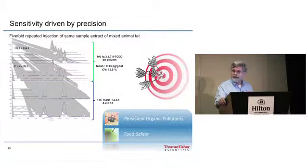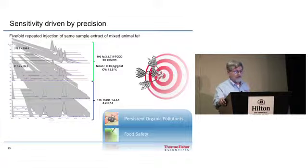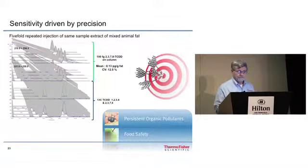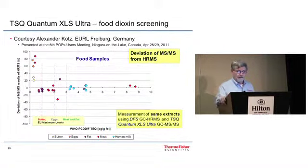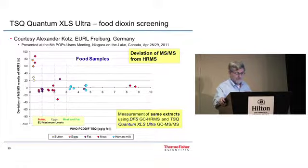And of course we want the answers to be precise. So here's an example of 100 femtograms on column in fat with a CV of 12.5%. And confirmation is done by ion ratios. And here's a chart or graph showing you how close the ion ratios are to the calculated values. In this example we're showing different types of food products with a comparison of what was the results from high res versus those by the GC triple quad.